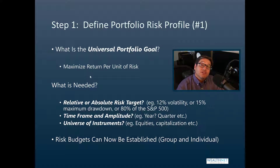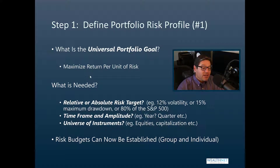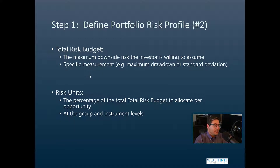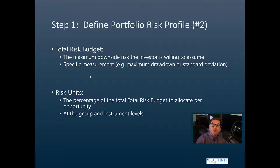We also need to know what universe of instruments we're going to use — stocks, bonds, commodities, currencies — because that has a lot to do with the amount of diversification benefits we can achieve. Once we have those three things, we need to define what the total risk budget is. That will be defined as the maximum downside risk the investor is willing to assume — whether it's maximum drawdown, standard deviation, or whatever that measure is. From there, we can drop it down into risk units: the percentage of the total risk budget we're going to allocate per opportunity, defined at the group level and at the individual instrument level.